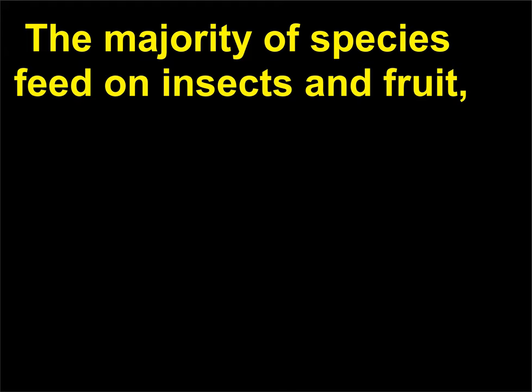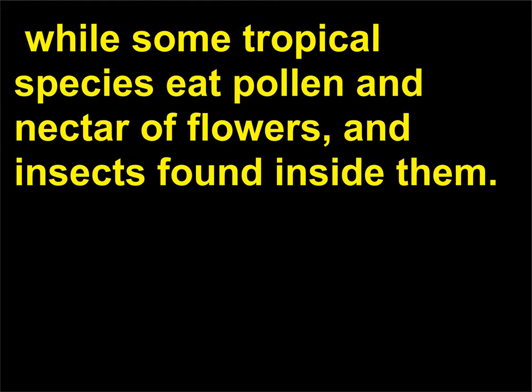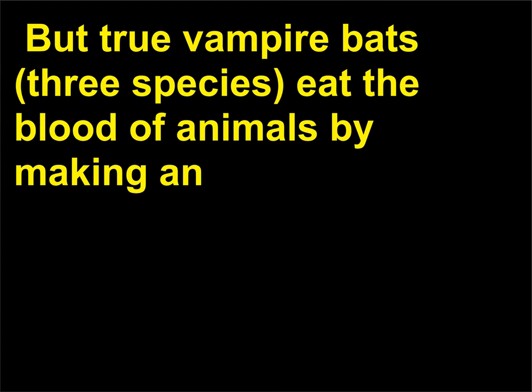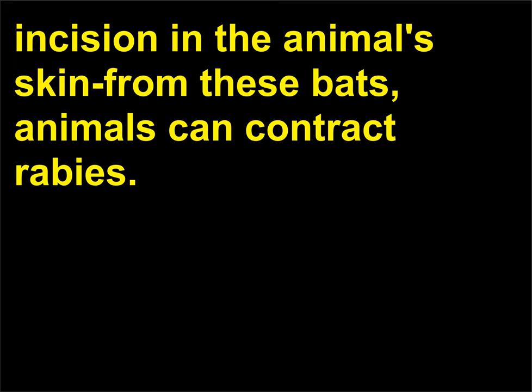The majority of bat species feed on insects and fruit. Some tropical species eat pollen and nectar of flowers and insects found inside them. Moderate-sized species usually prey on small mammals, birds, lizards, and frogs, and some eat fish. True vampire bats — three species — eat the blood of animals by making an incision in the animal's skin; from these bats, animals can contract rabies.